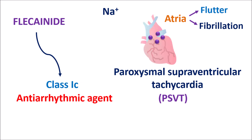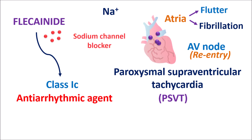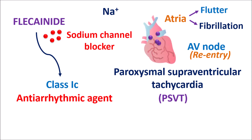Sometimes impulses can also be generated from the AV node because of re-entry type arrhythmia, where a unidirectional conduction block may lead to a circular motion of impulses. In such conditions, Flecainide can be given as a sodium channel blocker. This drug can block the excessive sodium channel activity such that it can reduce the excessive heartbeats.